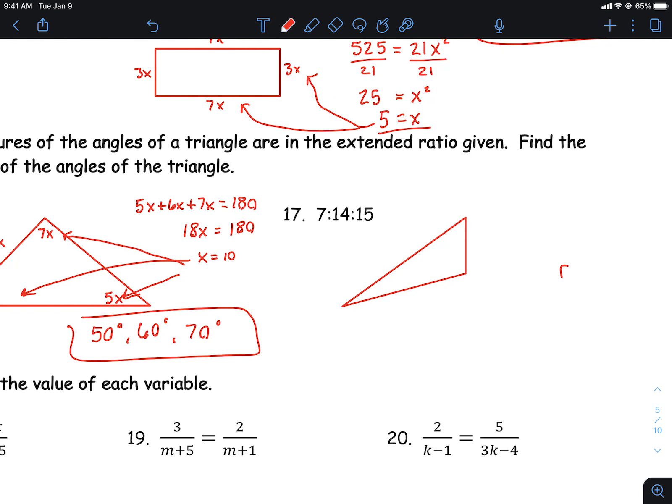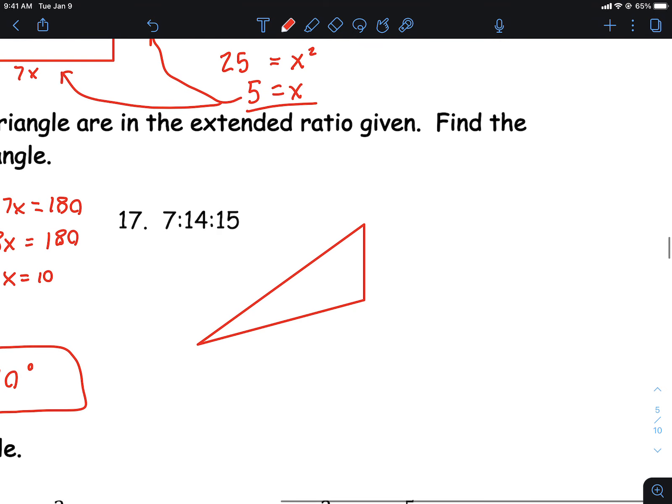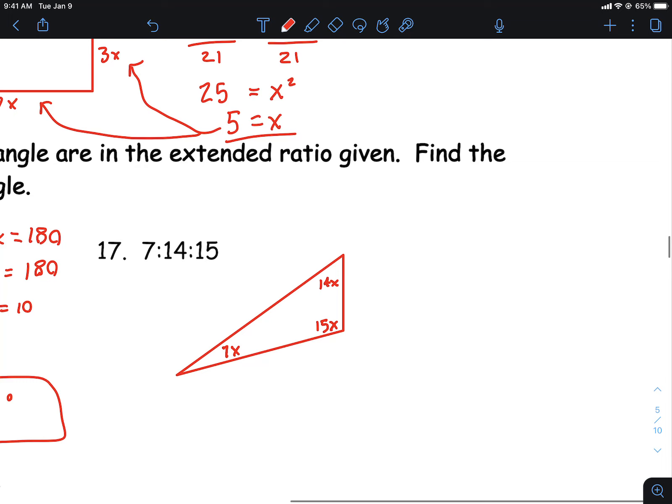Make another triangle here. I'm just kind of making this up. So I need 7 times 1 angle, 14 times 1 angle, 15 times 1 angle. And like before, all of these need to add up to 180. Okay, let's see here. 7 and 14 is 21, and then plus 15, what is that? 36x, I guess.